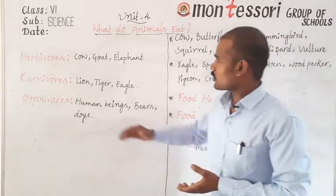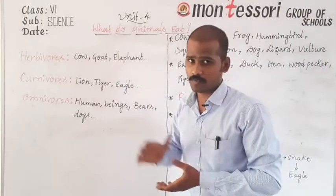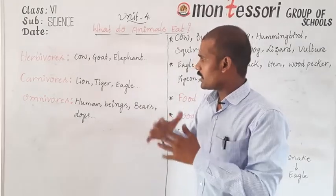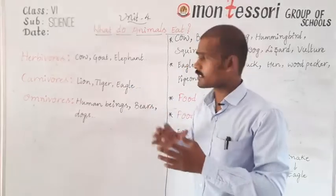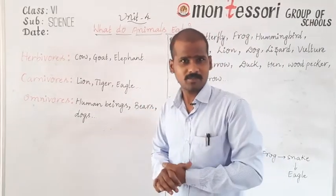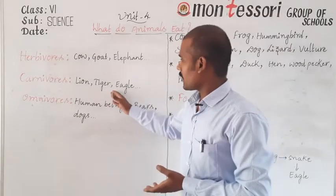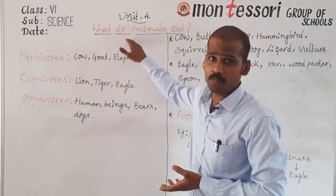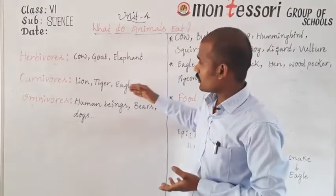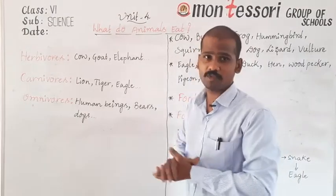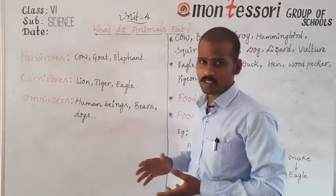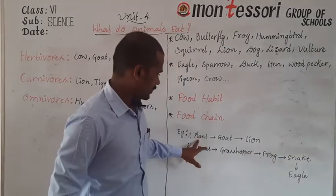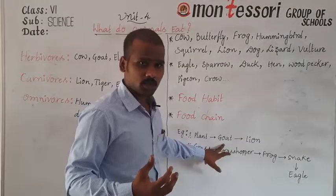Now consider that lion, tiger, and eagle eat the flesh of other animals — they are carnivores. You might think plants don't matter for them, but that is not correct. Lion, tiger, and eagle eat herbivores like cow, goat, and elephant, which eat plants. If there were no plants, the cow, goat, and elephant would have nothing to eat — and then lion, tiger, and eagle couldn't find food either. So directly or indirectly, every organism depends on plants.